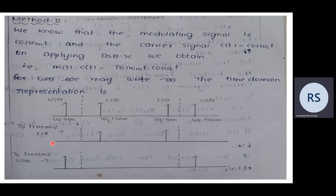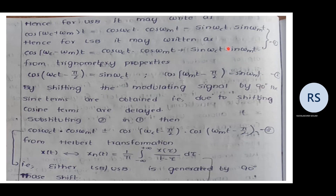To transmit the LSB, we select only the lower sideband in the time domain. To transmit the USB, we select only the upper sideband. For USB, we can write: cos(ωc + ωm)t = cos(ωc·t)·cos(ωm·t) - sin(ωc·t)·sin(ωm·t). For LSB: cos(ωc - ωm)t = cos(ωc·t)·cos(ωm·t) + sin(ωc·t)·sin(ωm·t).